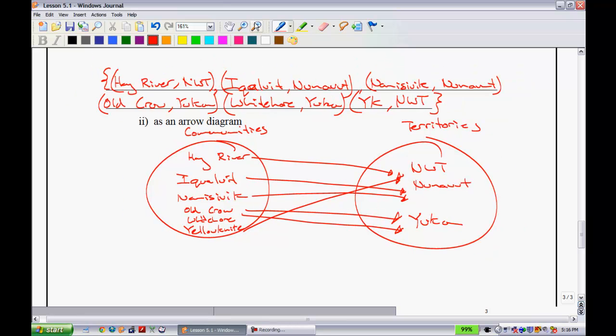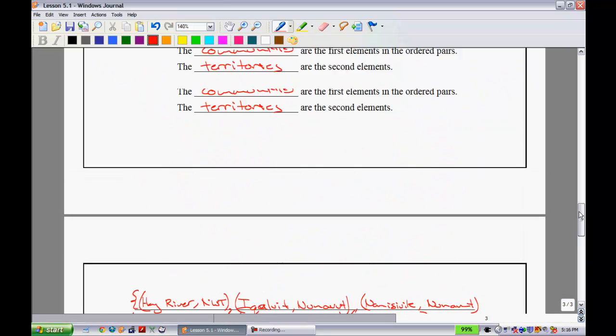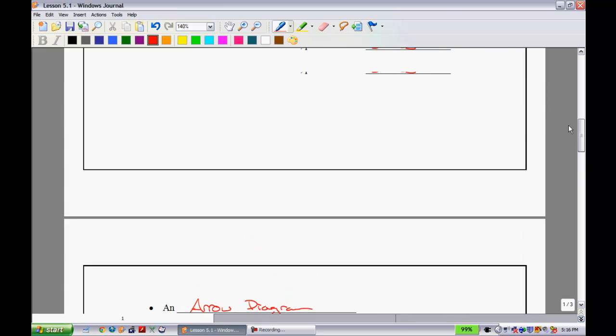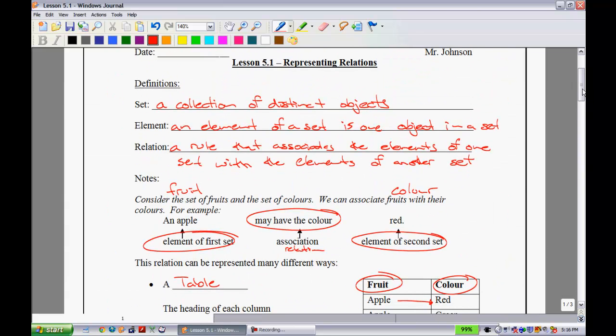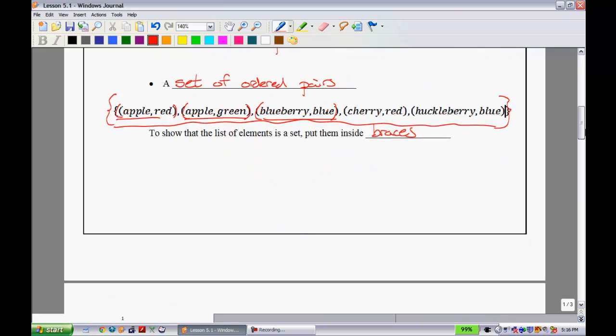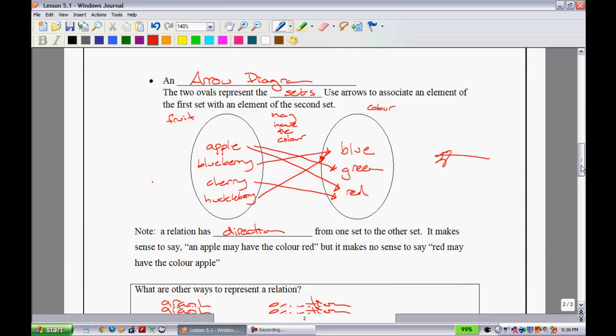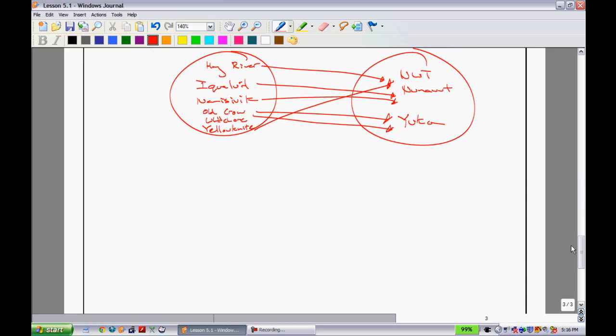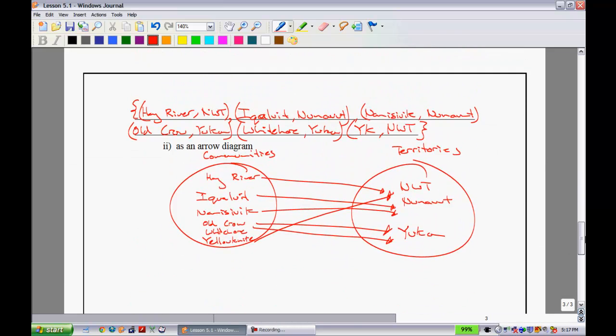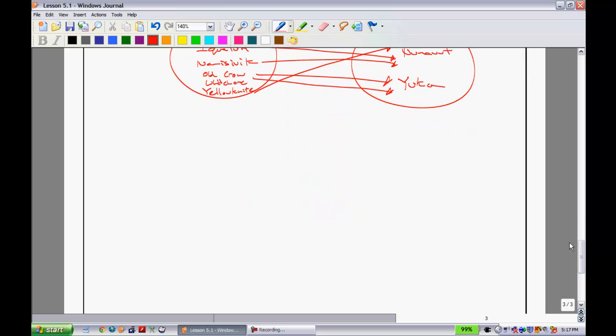So, to summarize this lesson, what we can see is that there's just different ways to show relations. We're going to be looking at showing relations with the table, showing relations with a set of ordered pairs. Sometimes you can use that arrow diagram. I just want you to be comfortable with these. You'll note that the assignment that I made for this is fairly small. I just want to make sure that you guys can make these on your own. So that completes this lesson.